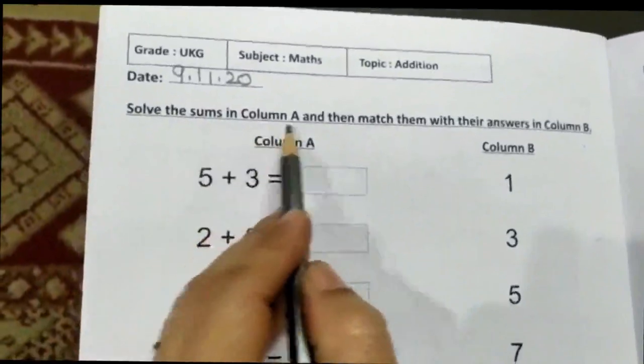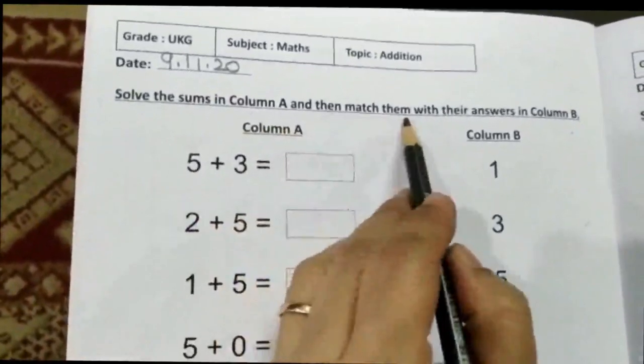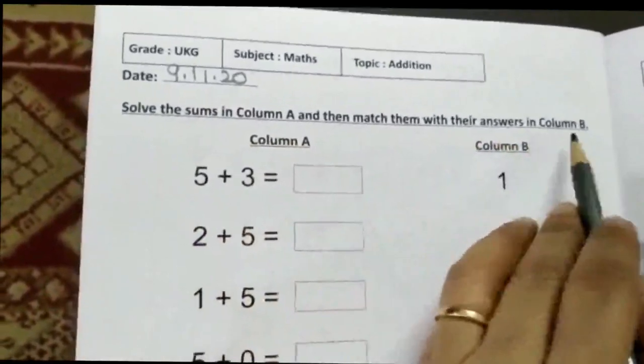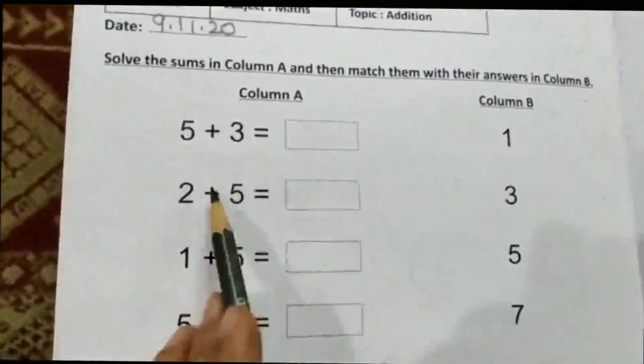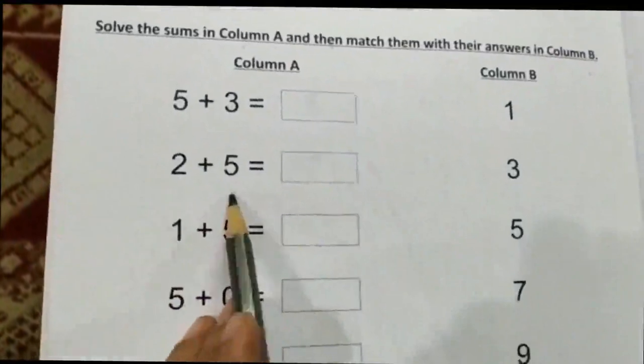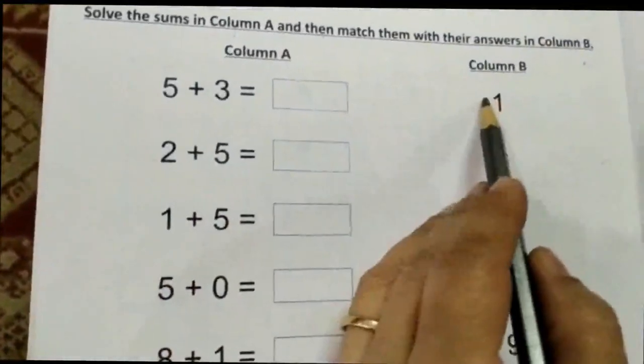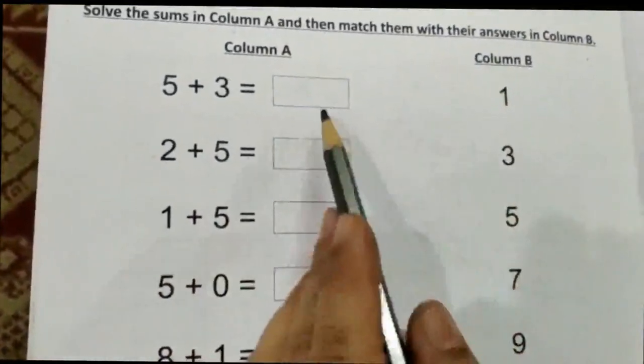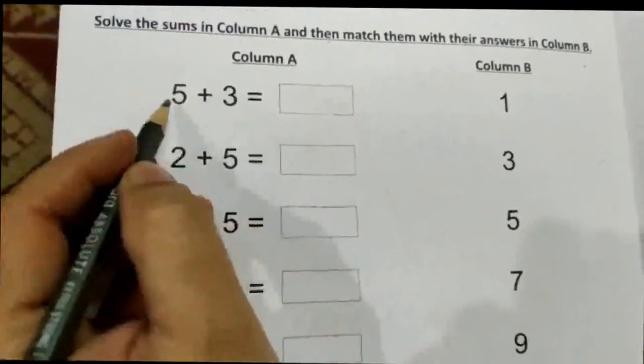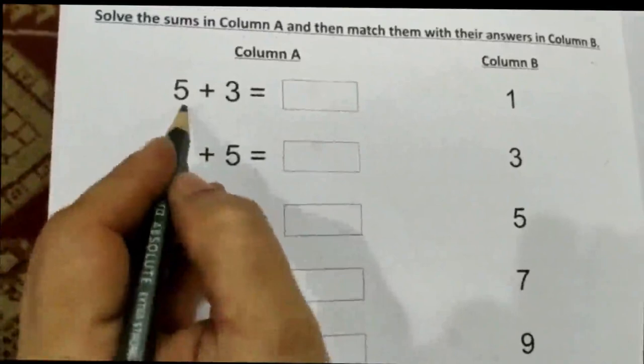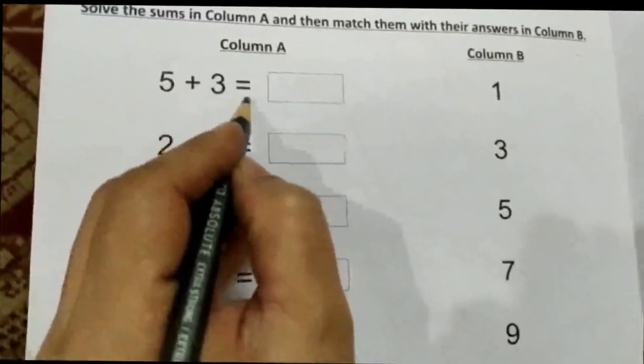Solve the sums in column A and then match them with the answers in column B. We have to do the sums first, then match their answers. I will do the first two sums for you. 5 plus 3 equals: take the bigger number, lock it in your mind, take out three fingers, and start forward counting.